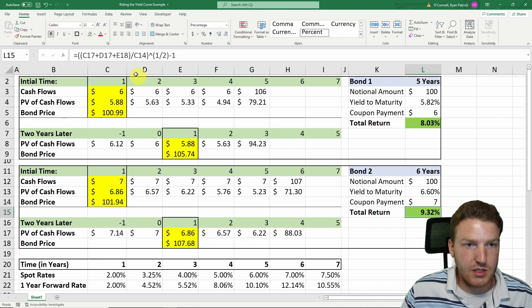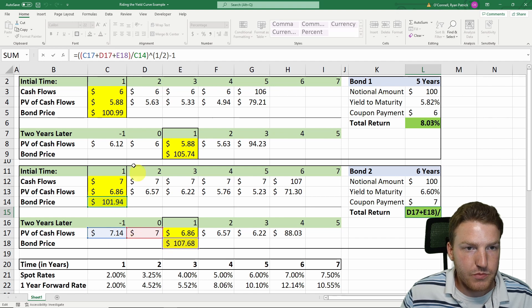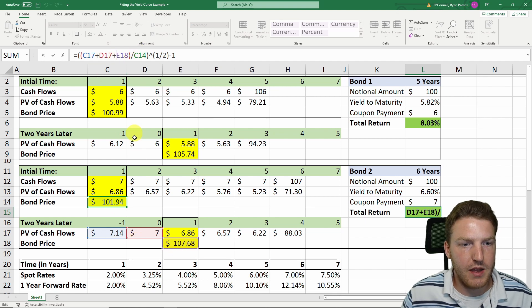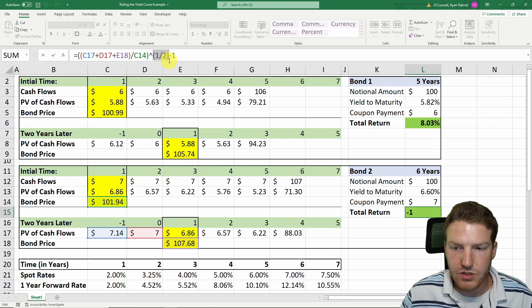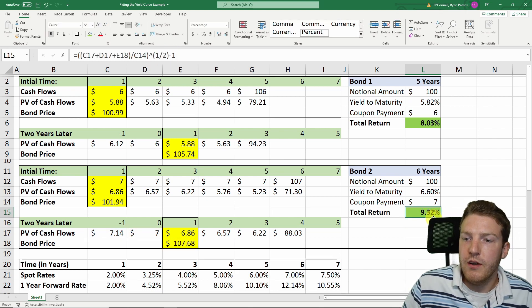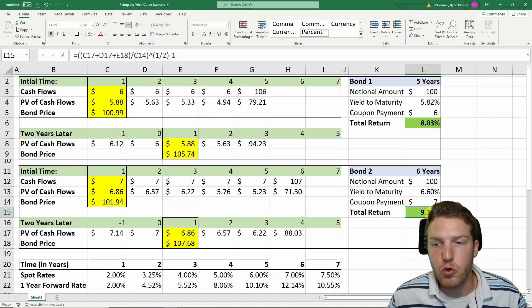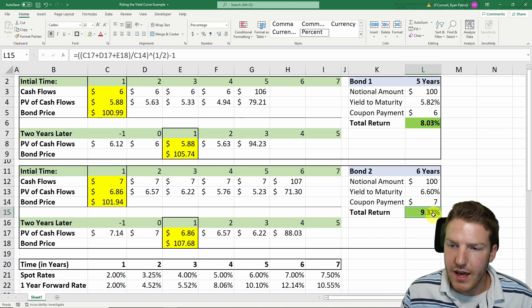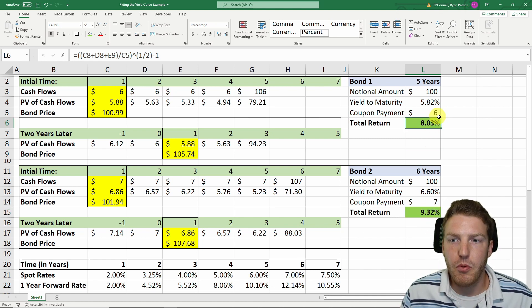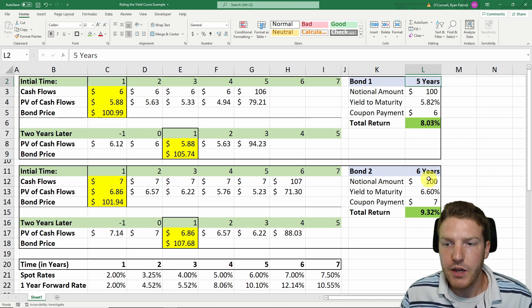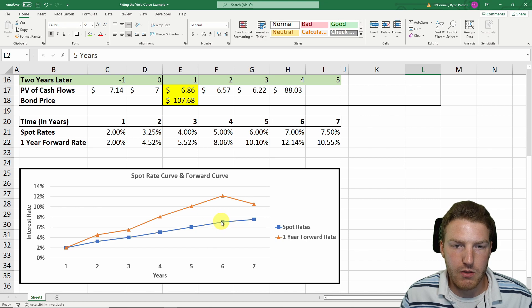Then we can take all three of these values, add them up, divide by the initial price we paid, and take the square root like we did with the last one, and find that this would give us a total return of 9.32%. We see that this is a better return than the 8.03% with the five-year bond, because we rode out farther on the yield curve.